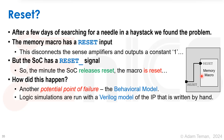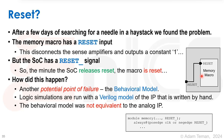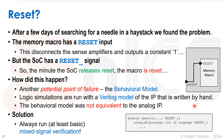How did that happen? It's another potential point of failure. The behavioral model logic simulations are run with a Verilog model of the IP, and that behavioral model is written by hand. The behavioral model had a reset_n in it, with always at negedge reset to show the behavior of the macro, but the macro itself was custom-designed with a reset-high signal — so they were not equivalent.